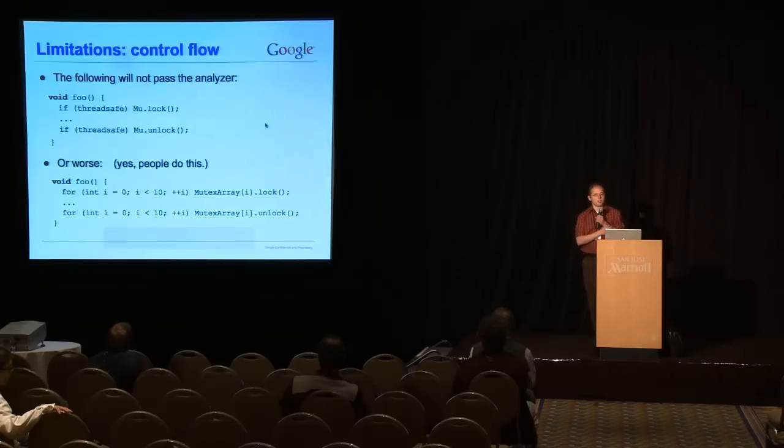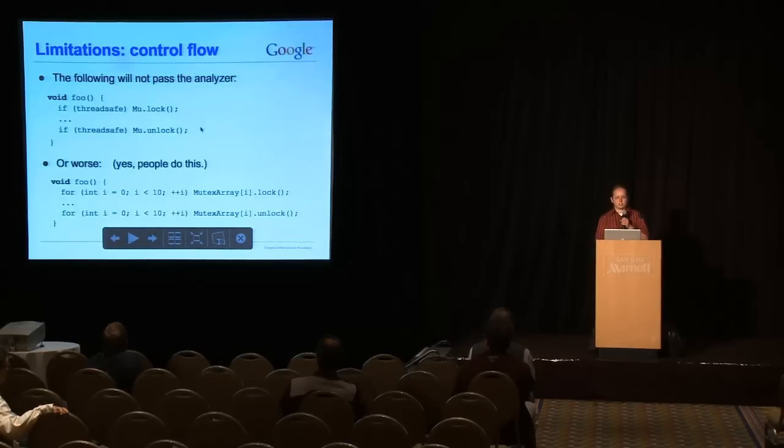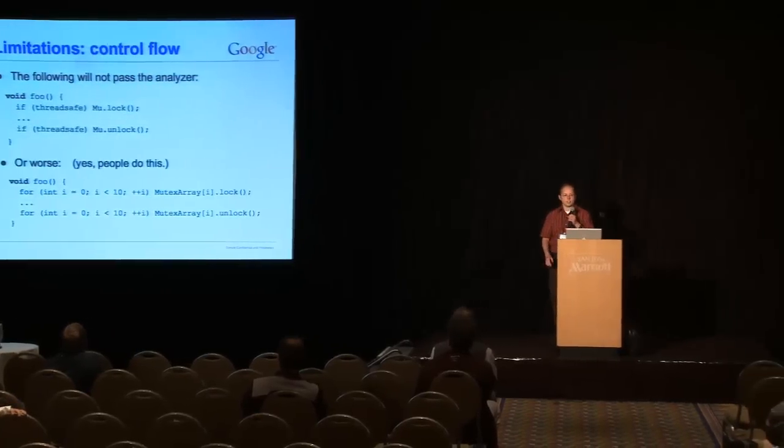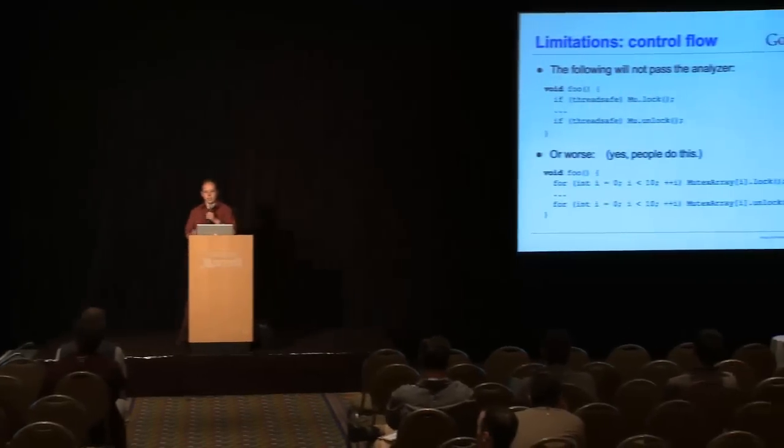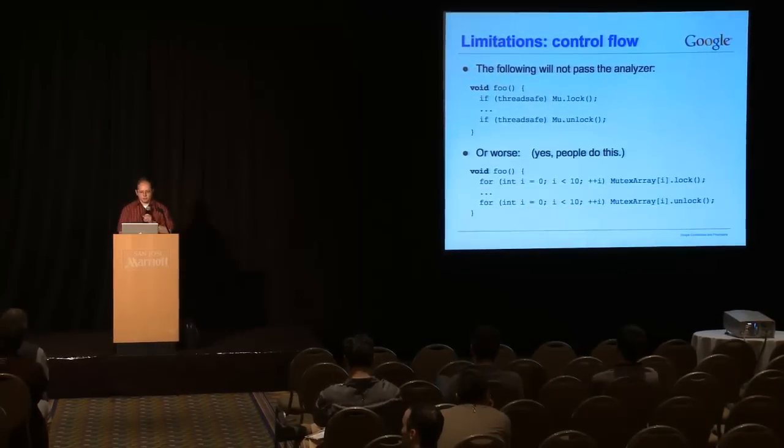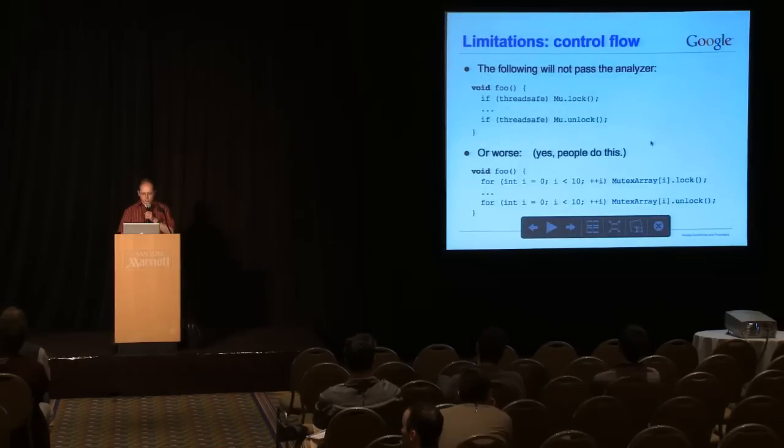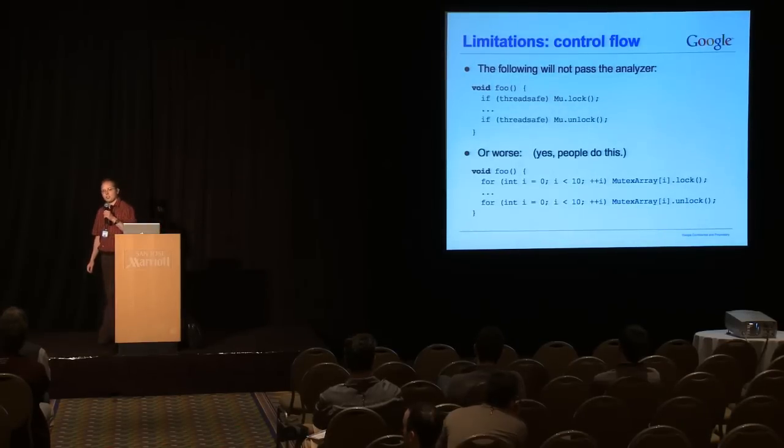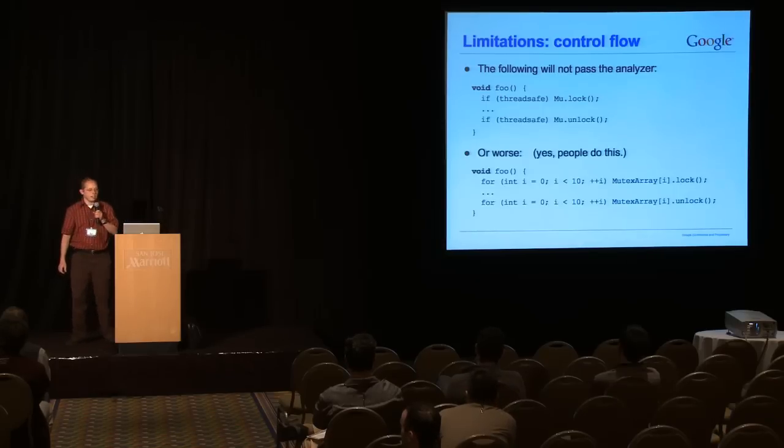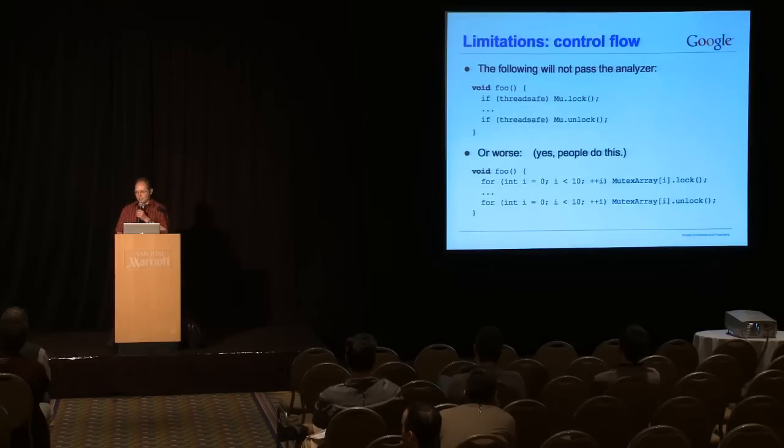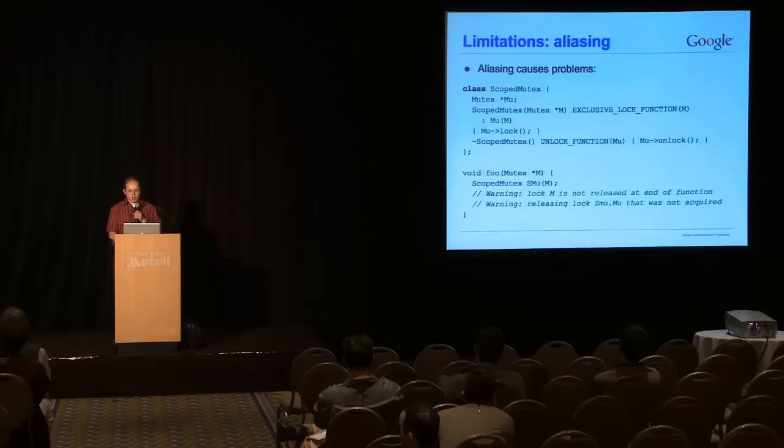So, some limitations. I mentioned the thing about join points. That prevents things like if thread-safe mu.lock, and if thread-safe mu.unlock, because there's a join point there, it'll give you some warnings that can be irritating at times. Another thing that we have seen in practice is people do something very complicated, like lock and unlock a whole array of stuff. Not much I can do about that. This, that sort of thing. We do have a way to turn off the warnings. If you have a function of this nature, you can put no thread safety analysis on it, and it will turn off your warnings for you. That's the escape hatch.